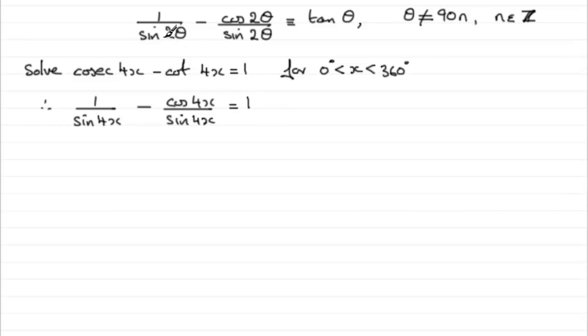Now, you can see it's got this kind of pattern structure. Only the 2 theta is the 4x. So if I compare it to that, 2 theta being 4x, then theta must be 2x, half of it. So knowing that this is the same as tan theta, I can write this as the tan of 2x.